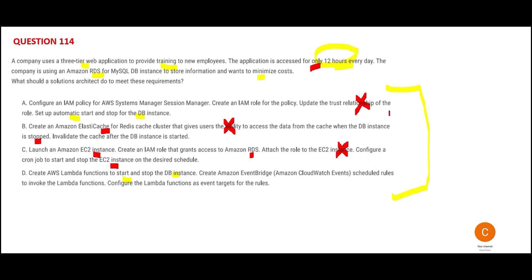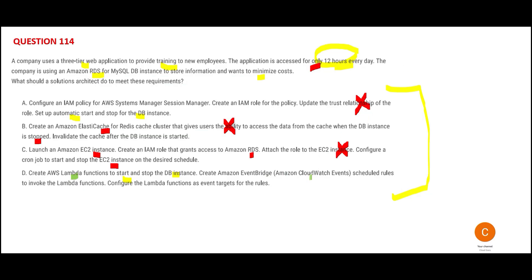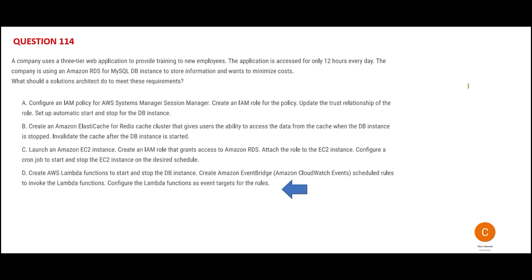So we are left with one answer: use Lambda to start and stop the database, because it is serverless and very cost-effective. You can use CloudWatch Events — now called EventBridge — to invoke Lambda functions and configure Lambda as event targets for the rules. This way you minimize cost, as Lambda is very cheap compared to EC2 or ElastiCache.